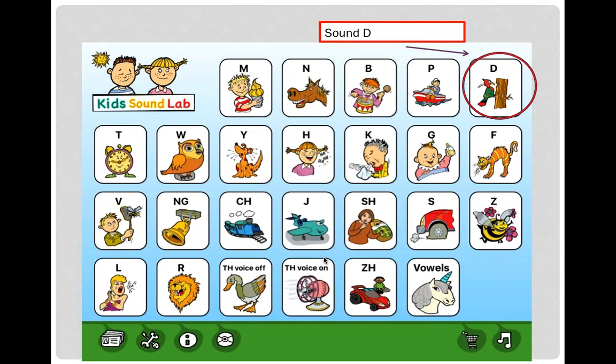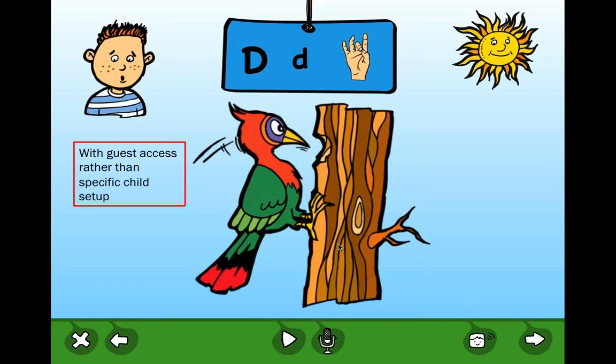After setting up a client, you choose the sound to work on. One really nice feature is that you don't go straight into words — you start by listening to the sound in isolation, linked where possible to an environmental sound. For example, a woodpecker tapping provides auditory stimulus at a non-linguistic level, which is quite novel compared to many other apps. The student can listen, record their own attempt, and play it back using the microphone button at the bottom of the page.